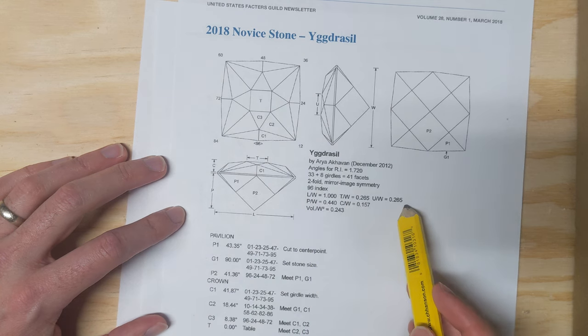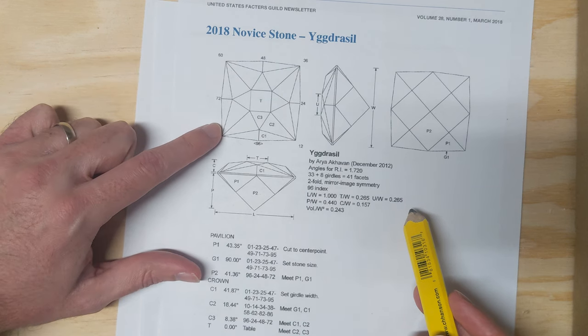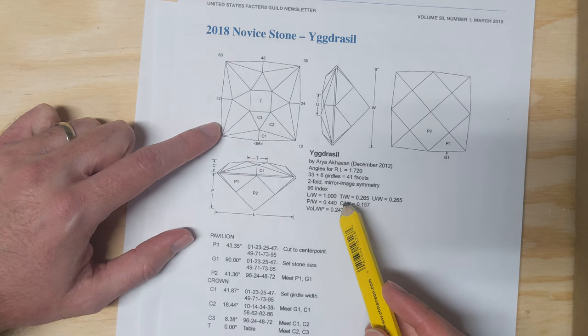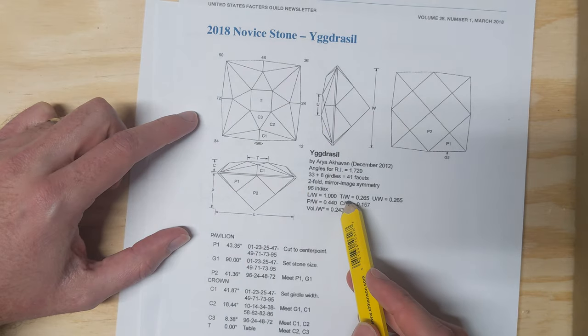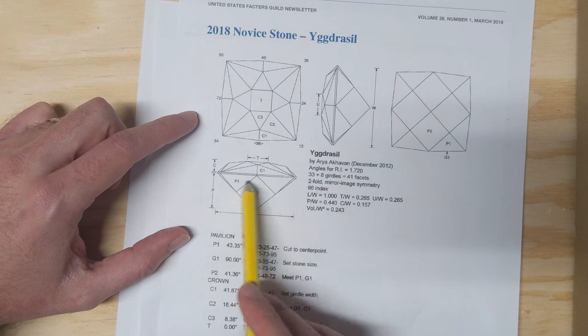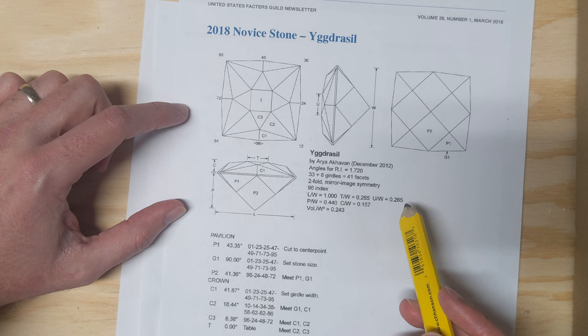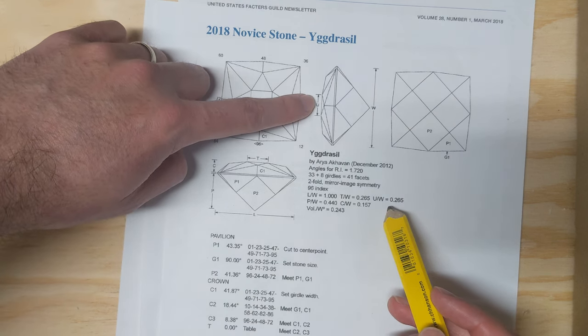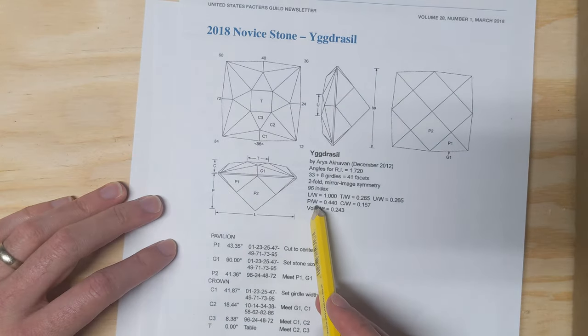Underneath there is a bunch of ratios that you can use to calculate what sort of stone rough you'll need to produce this design. It's a length to width of 1, which means it's square or round, but in this case it's square. This way equals that way. T to W—T is the table, W is width—so the table to width is 0.265. U to W is the other part of the table, which is the same since this is a mirror image. P to W, pavilion to width. C to W, crown to width.